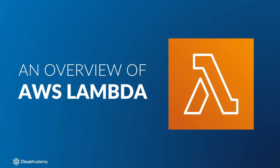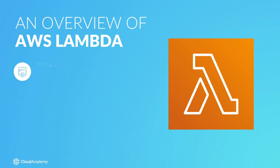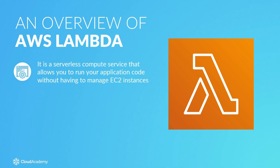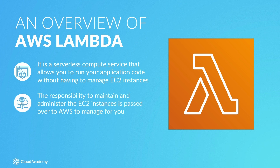Before we can understand how this service can be used to run and scale your code, we first need to understand what the service is exactly. AWS Lambda is a serverless compute service which has been designed to allow you to run your application code without having to manage and provision your own EC2 instances. This saves you having to maintain and administer an additional layer of technical responsibility within your solution — that responsibility is passed over to AWS to manage for you.